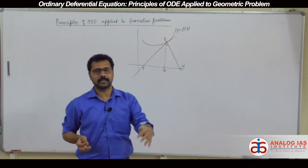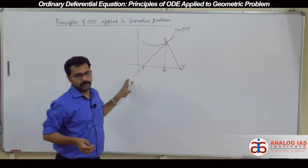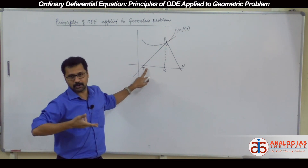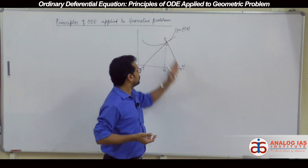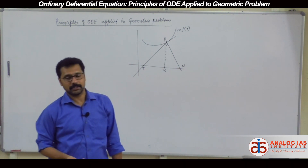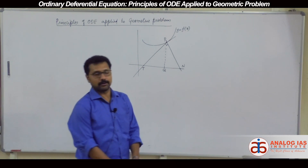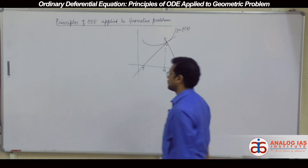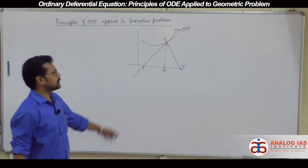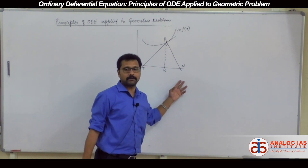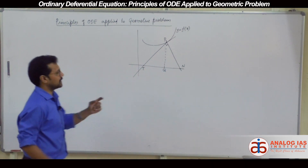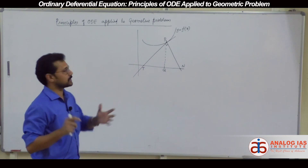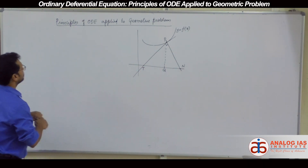So y minus y1 equal to m times x minus x1 gives the equation of the straight line. Where it crosses the x-axis, put y equal to 0 — whatever x you get is the point at which it crosses the x-axis. Similarly, to get the equation of normal: y minus y1 equal to minus 1 by dy/dx into x minus x1. Put y equal to 0 to see where it intersects the x-axis. Those points — take the length between those two points — give these expressions, all in the Cartesian system.